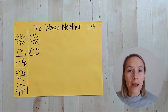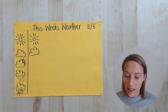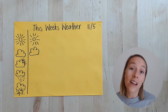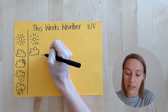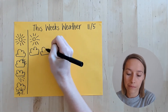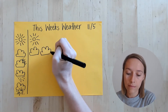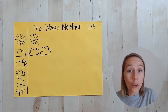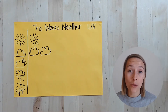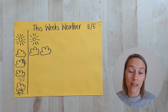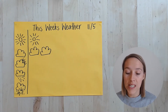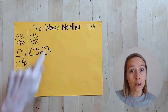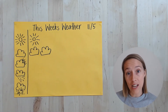Then I might wake up on Wednesday and it is another cloudy day, so we put another cloud here. You're going to keep going like this right until the end of the week. At the end of the week you should have seven records — seven pieces of data of what the weather is like.